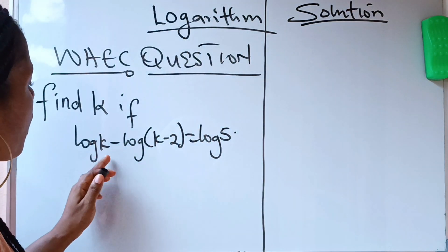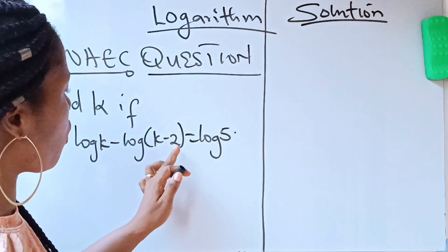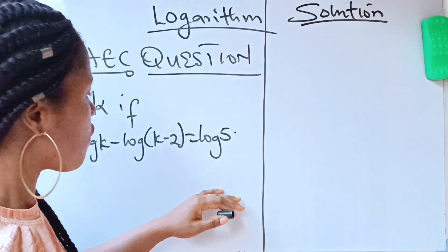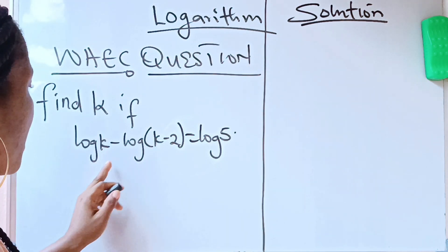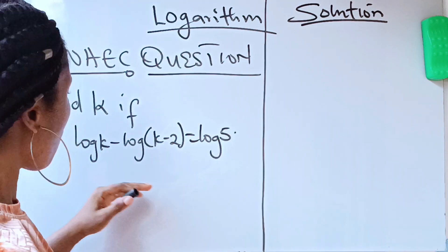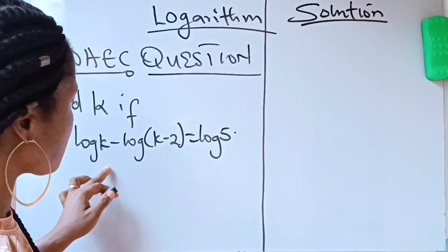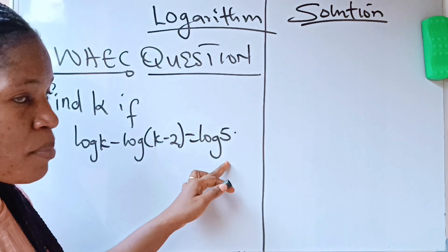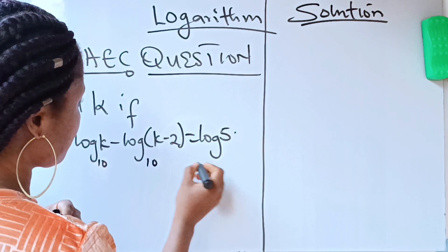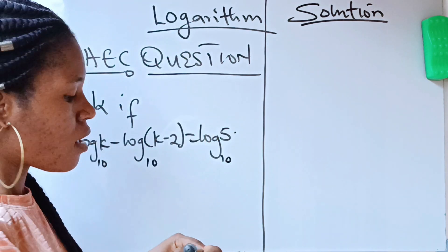Solution: log k minus log(k minus 2) is equal to log 5. First of all, when you look at this you notice that they are all in the same base. When you have logarithms like this without any base written, it means that they are in base 10.